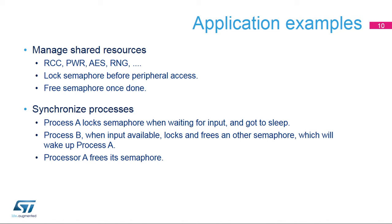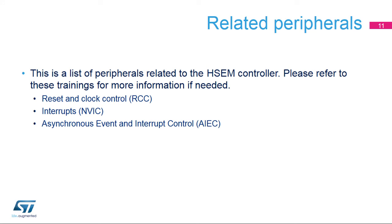Semaphores can be used to handle access to shared resources — that is, to read, modify, and write registers in a protected way, or to share functions like the AES encryption engine, random number generator, or RNG, etc. They are also used for synchronization between processes, that is, used by a process to wait for input from another process. Here is a list of peripherals related to the HSEM module. Users should be familiar with all the relationships between these peripherals to correctly configure and use the HSEM module.